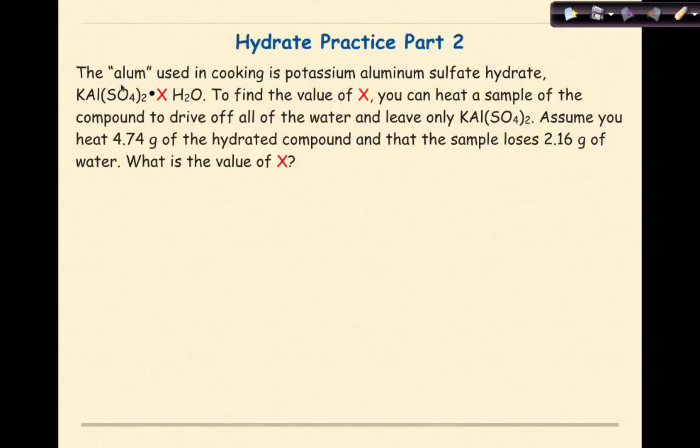Hydrate practice part 2. The alum used in cooking is potassium aluminum sulfate hydrate, KAl(SO4)2·X H2O. To find the value of X, you can heat a sample of the compound to drive off all the water and leave only KAl(SO4)2. Assume you heat 4.74 grams of the hydrated compound and that the sample loses 2.16 grams of water. What is the value of X?